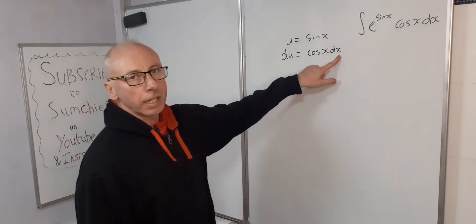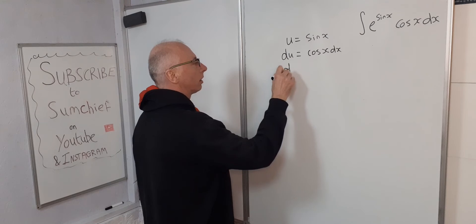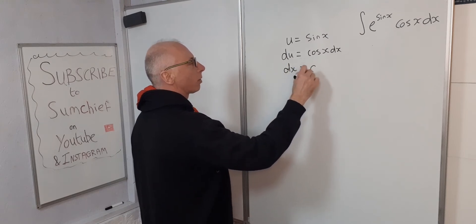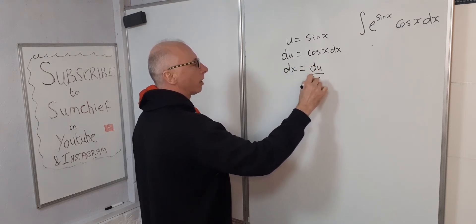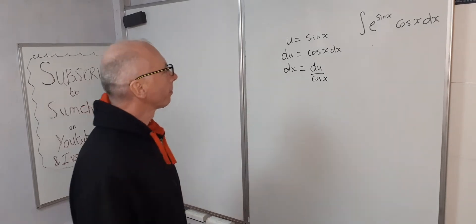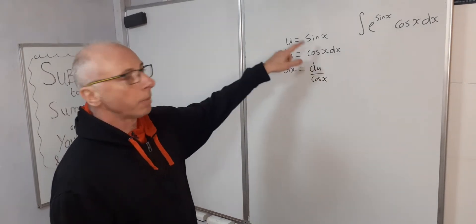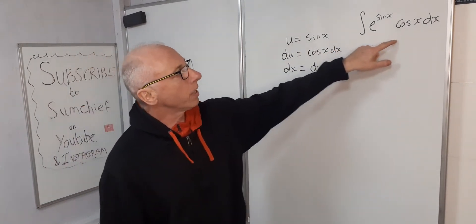Okay, now let's get dx on its own. So dx equals du over cosine x. Okay, so this is all the information we need now to transform this into the u world.